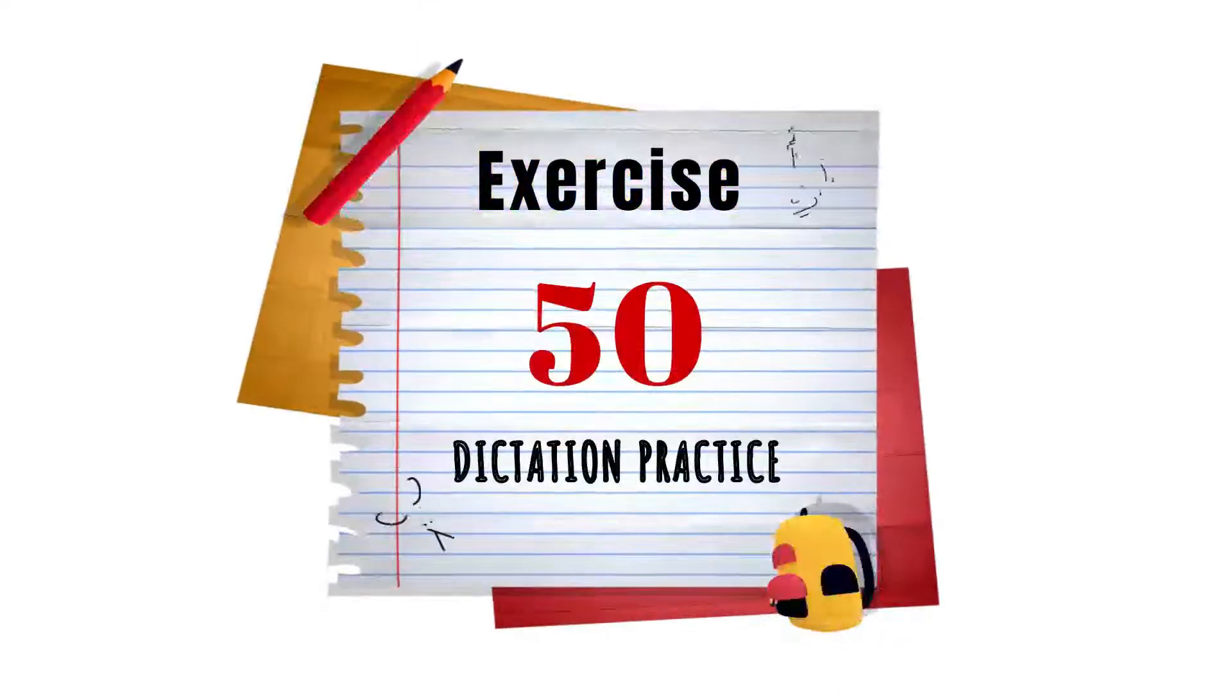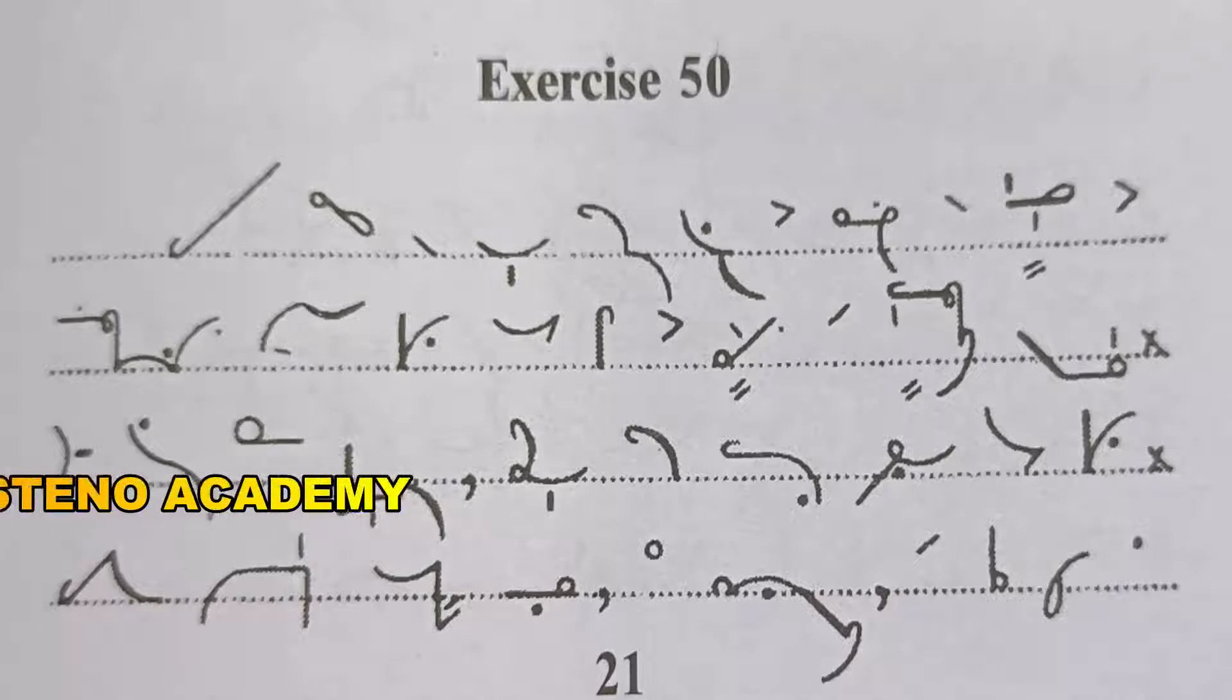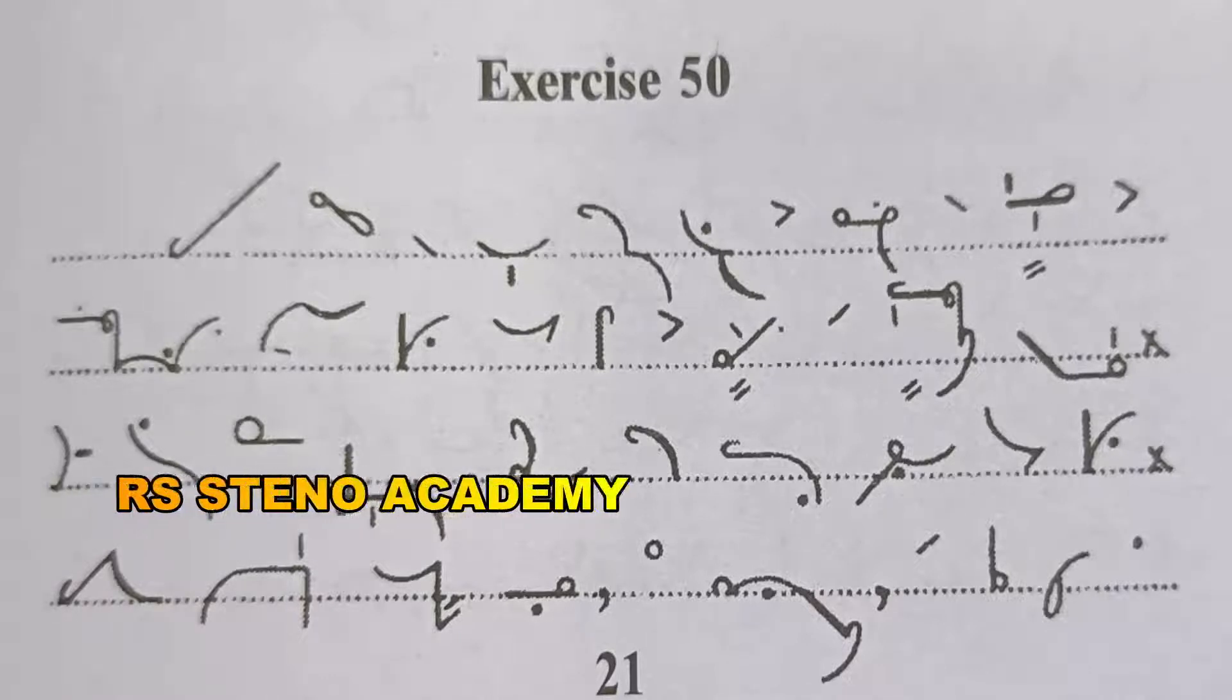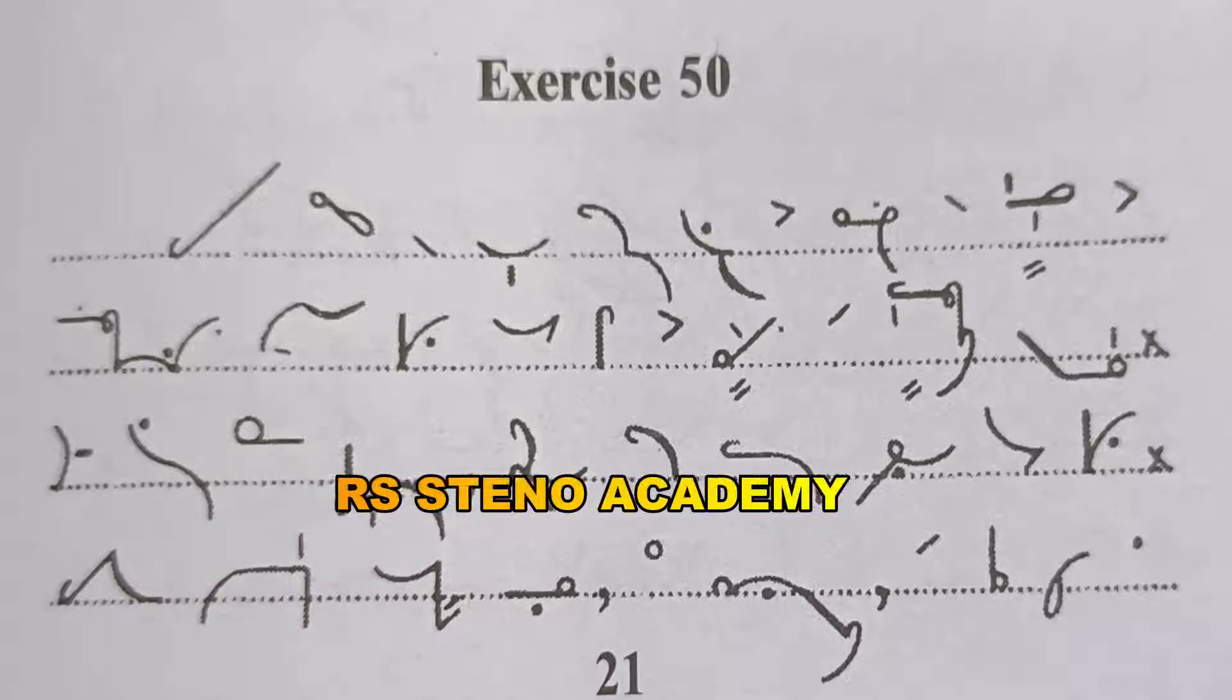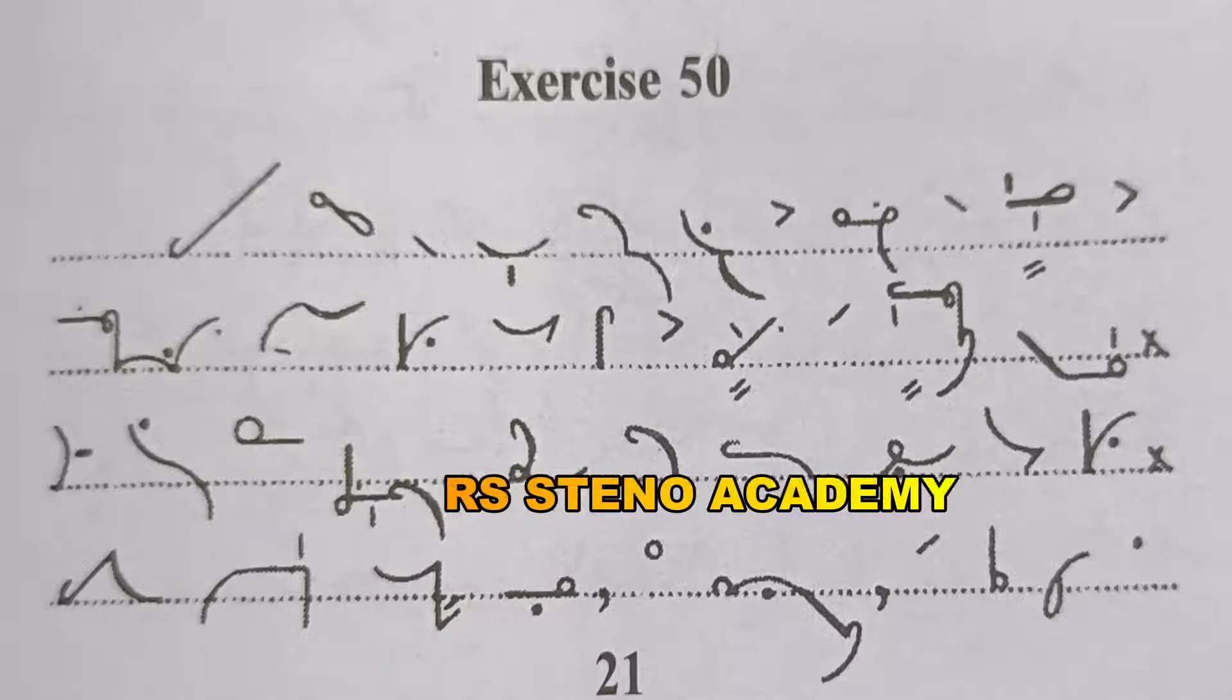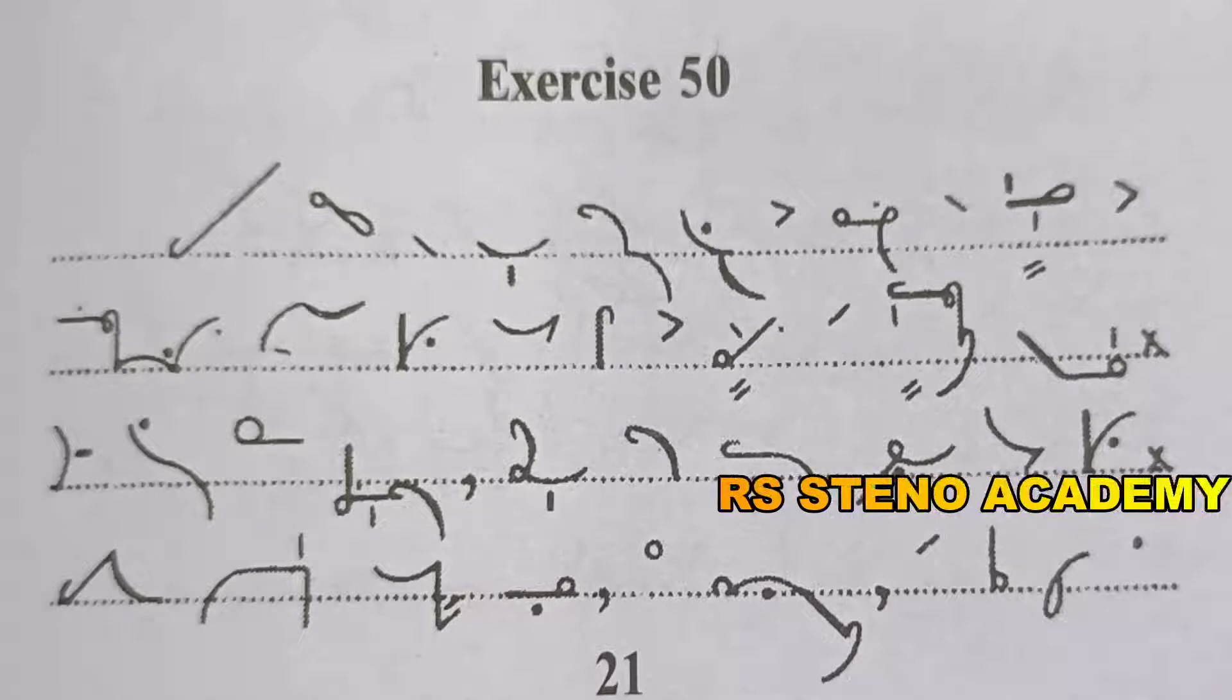Exercise 50. We are surprised to know from your favour of the 6th of August of the extremely long delay in the delivery of the Surrey and Gloucestershire books. Stop.